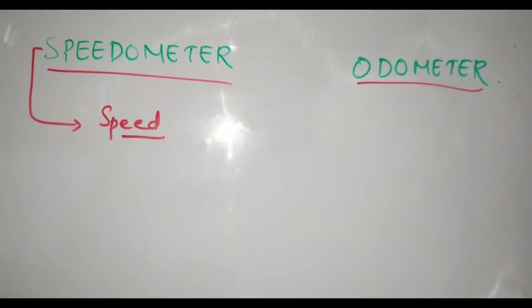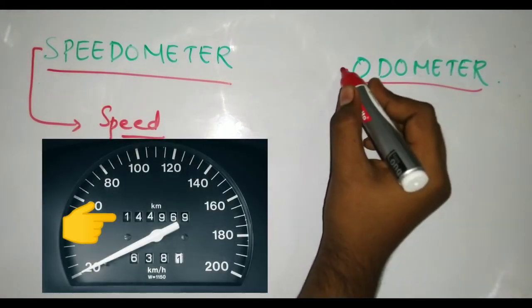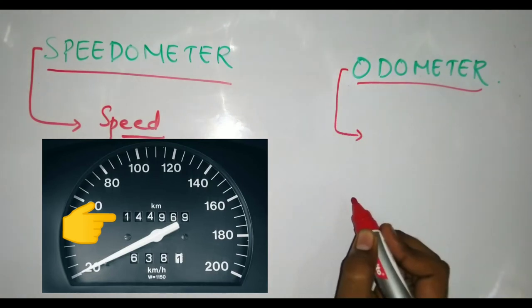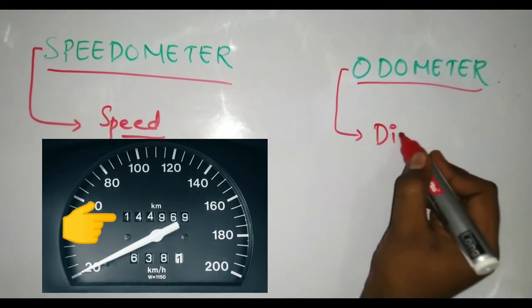So what is an odometer? Odometer is a measurement device which is used to measure distance.